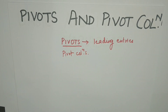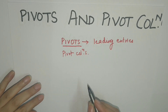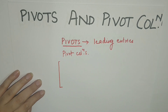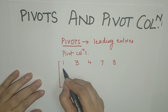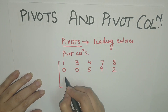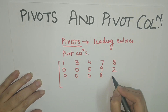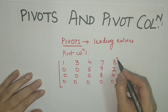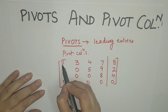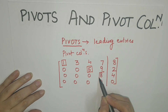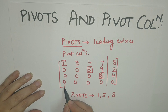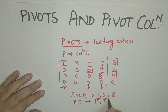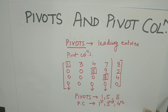Let us take an example. Consider the echelon form of the augmented matrix: [1, 3, 4, 7, 8 / 0, 0, 5, 9, 2 / 0, 0, 0, 0, 0]. The leading entries of the non-zero rows are 1, 5, and 8 — so these are the pivots. The columns containing these leading entries are the 1st, 3rd, and 4th columns. So the pivot columns are the 1st, 3rd, and 4th columns.